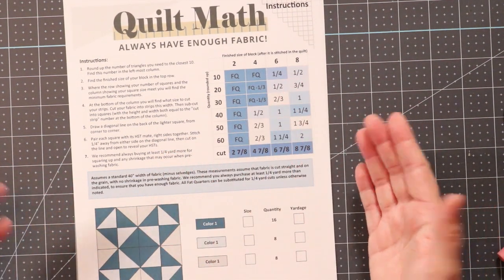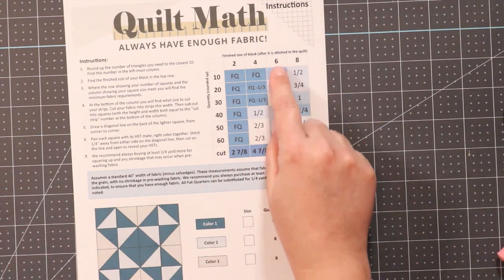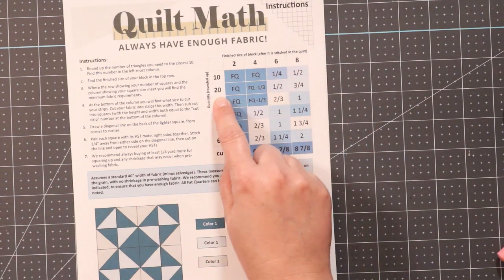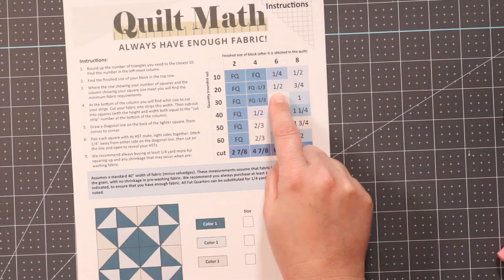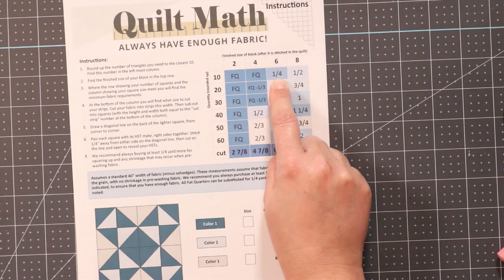If I say, oh, I want to make my quilt bigger, it's just as easy to do it again. If I want to do 6 inch blocks, then I know I need a half yard of color 1, a quarter yard of color 2, and a quarter yard of color 3.